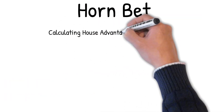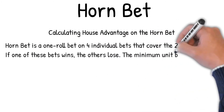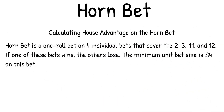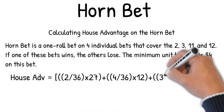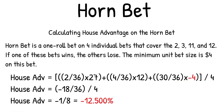Calculating house advantage on the Horn bet: the Horn bet is a one-roll bet on four individual bets covering the two, three, eleven, and twelve. If one of these bets wins, the others lose. The minimum unit bet size is four dollars. House advantage equals two out of 36 times 27 for hitting the two or twelve, plus four out of 36 times 12 for hitting the three or eleven, plus 30 out of 36 times minus four for not hitting any Horn number. Add those together, divide by four dollars: minus 18 out of 36 divided by four equals minus one-eighth, equals minus 12.5% house advantage.